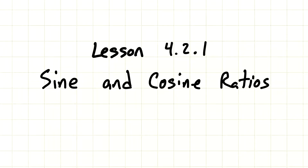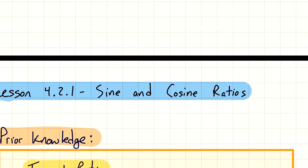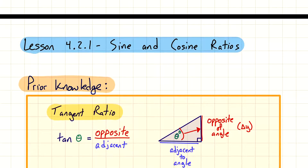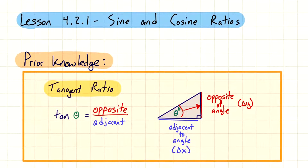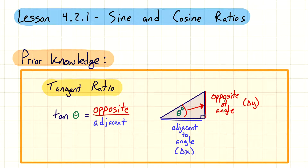Hey everyone, this is lesson 4.2.1 on sine and cosine ratios. This is a continuation of our right triangle ratios that we talked about last chapter. When we talked about our trig ratios last time, we were focused on our tangent ratio.